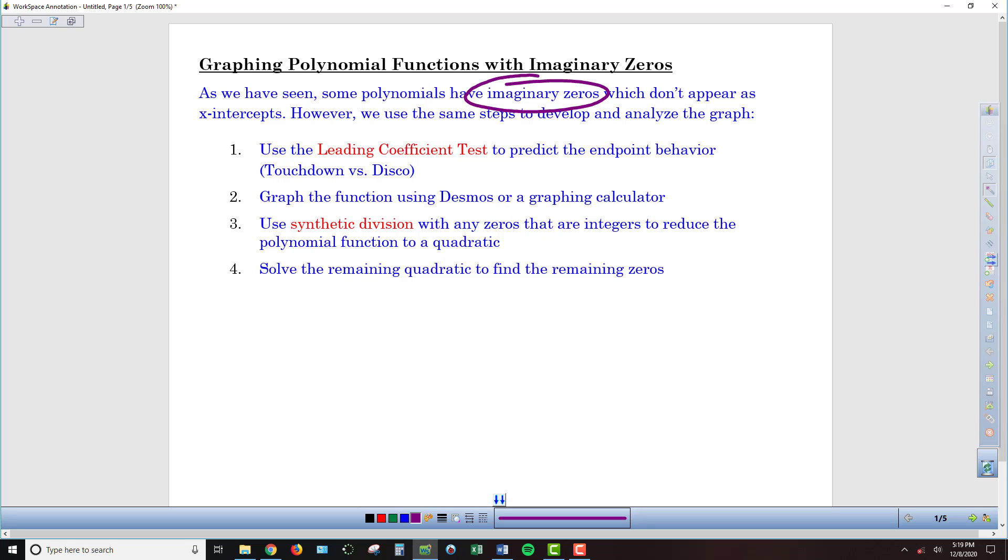The first thing we're going to do is use a leading coefficient test to get a sense of what the shape of the graph should look like. Then we're going to graph that function using Desmos. From that graph we'll find integer zeros that we can use via synthetic division to reduce the polynomial from a higher degree, like third or fourth degree, down to a quadratic. Then we can use quadratic techniques to solve for those imaginary zeros.